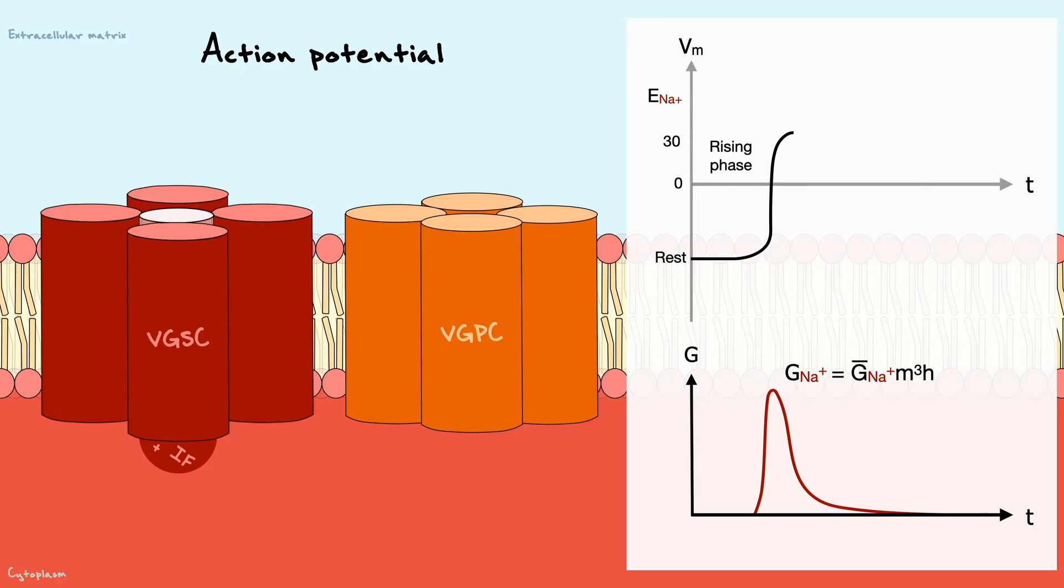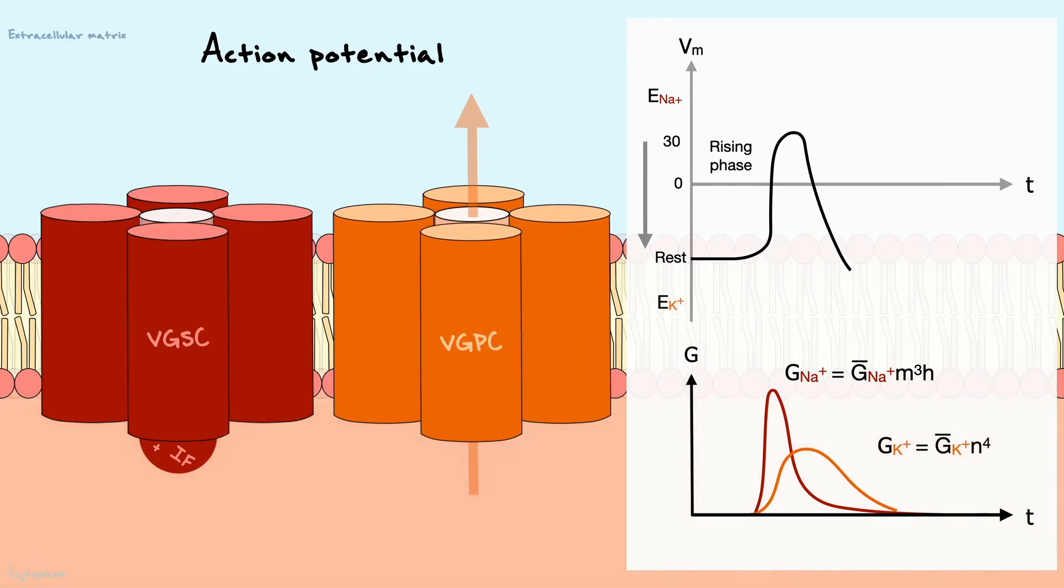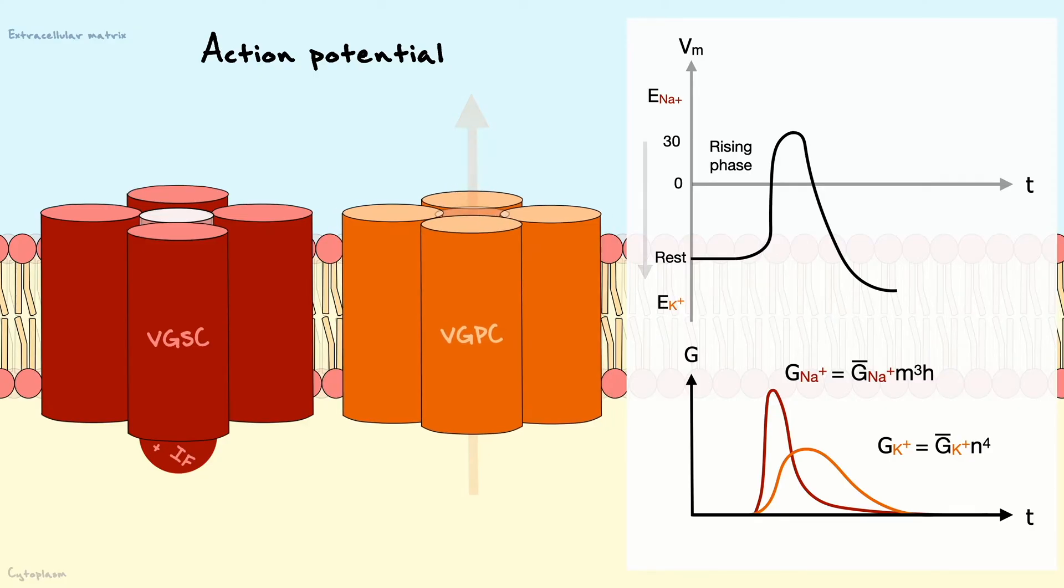Finally, the delayed voltage-gated potassium channels now open at maximal conductance and start repolarizing the cell towards the equilibrium potential of potassium. As the membrane potential goes back to the resting value, the potassium channel closes and its conductance decreases as well.